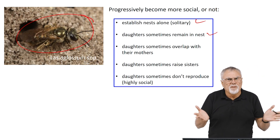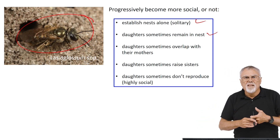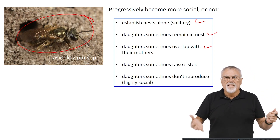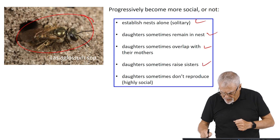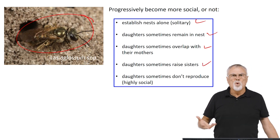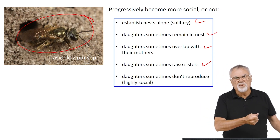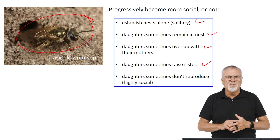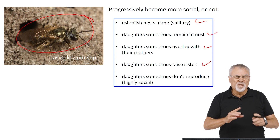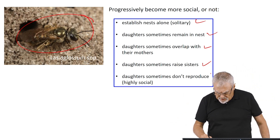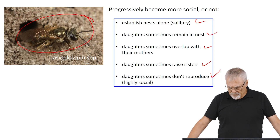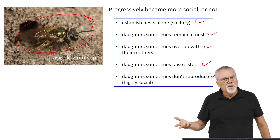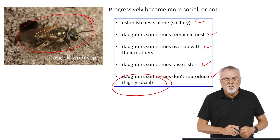Sometimes the daughters overlap with their mothers — the mother didn't die, they emerged, they overlap — and sometimes they will stay and raise sisters, so they become workers. They stay and work and raise sisters, working for their mother. Sometimes the whole life of this nest is a single female: she made daughters, they left. But sometimes daughters will not reproduce themselves — they will help their mother and raise sisters and won't lay eggs themselves. Now they've become highly social.